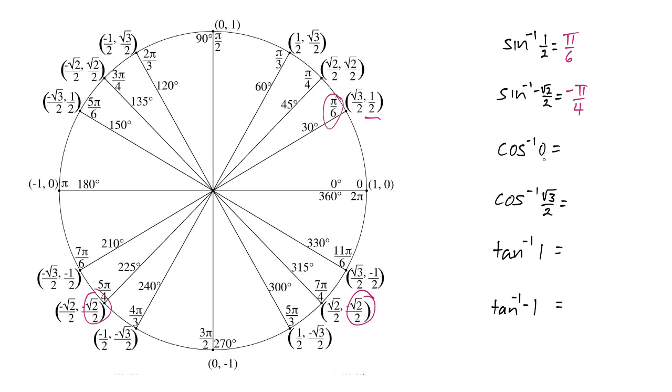What about cosine inverse of 0? When is the x value 0? Right up here. So the angle is pi over 2.